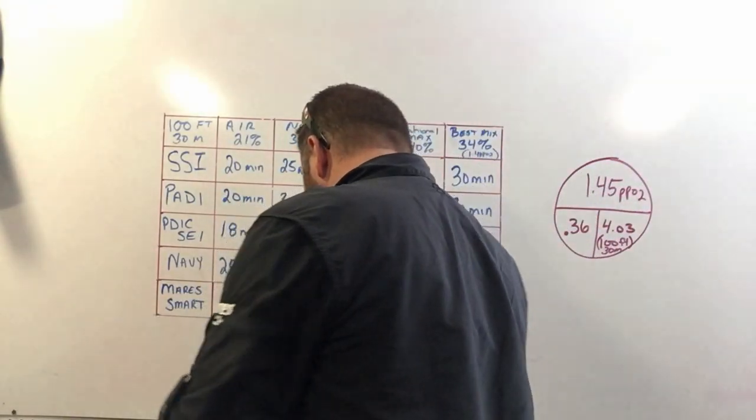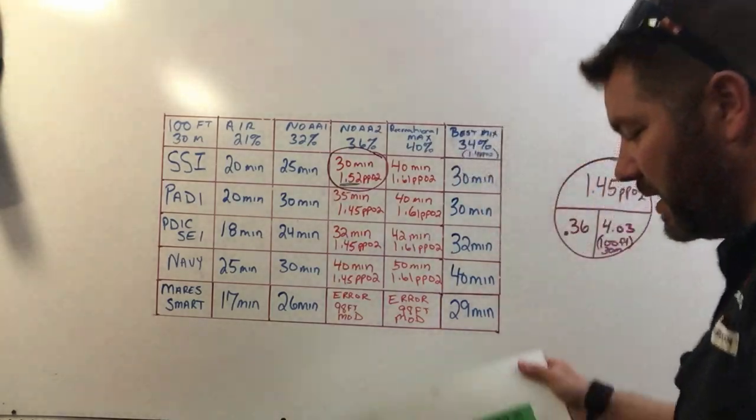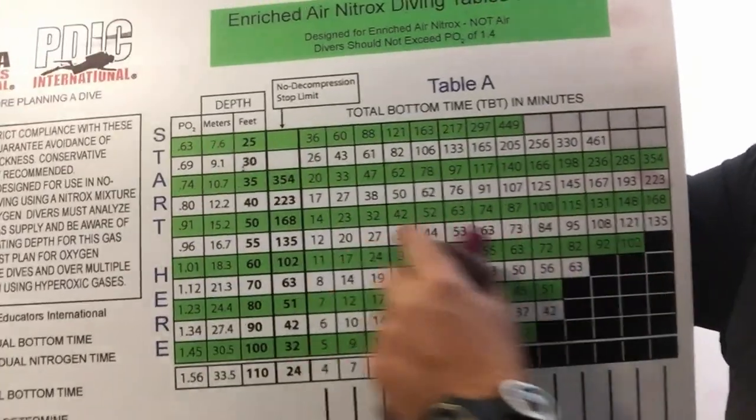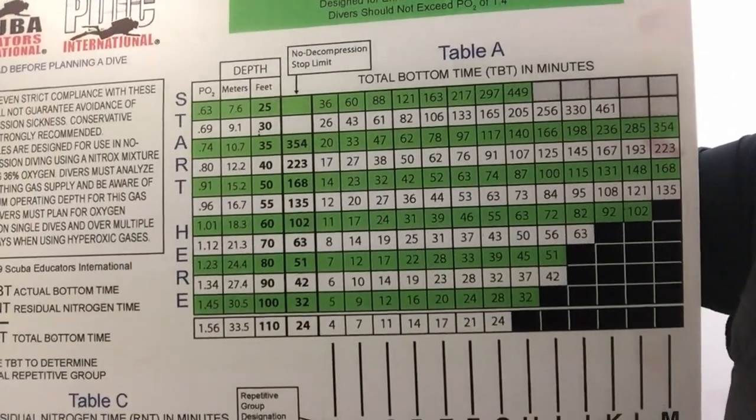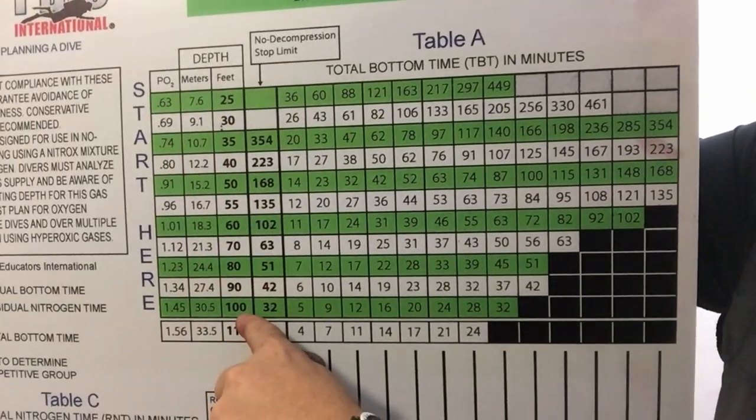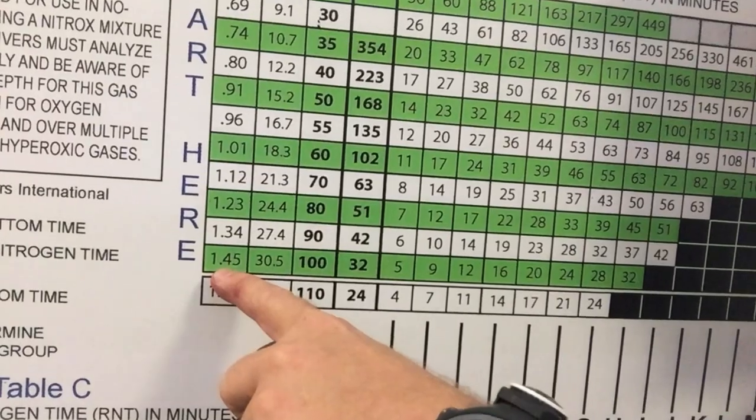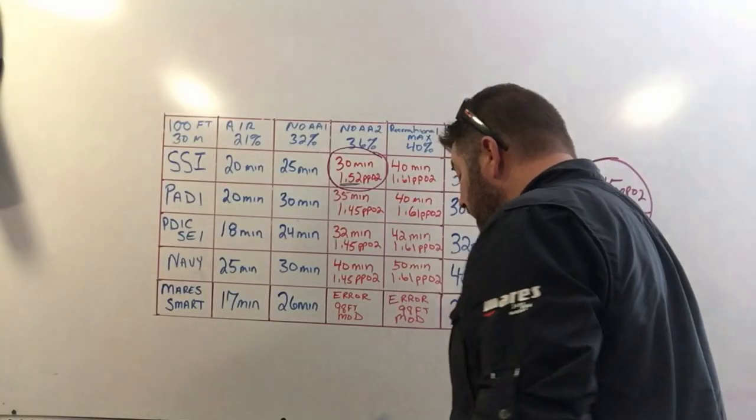Let's look at another agency that we train through as well. I'm using the 36 percent table. If I come down under feet to 100 feet and I zoom over here, you'll see where it says 1.45 partial pressure of O2. So it's pretty consistent as well.